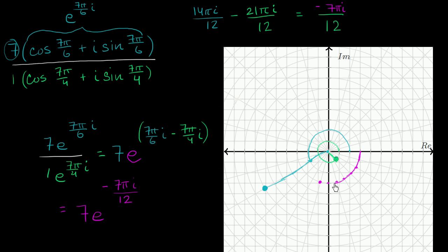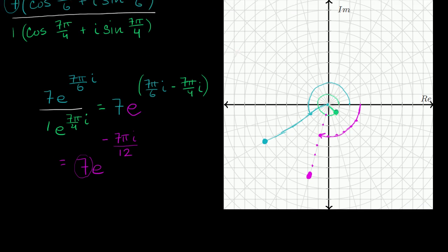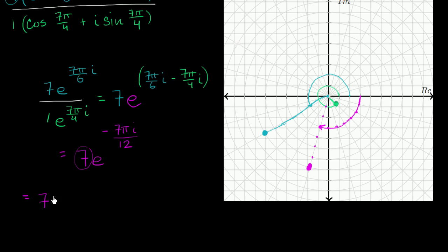Our distance from the origin is seven, so we go out one, two, three, four, five, six, seven — landing right over there. So this complex number divided by that complex number equals this complex number: seven times e to the negative seven pi i over 12. In polar form, this is seven times cosine of negative seven pi over 12 plus i sine of negative seven pi over 12.